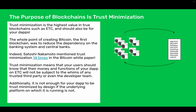The whole point of creating Bitcoin, the first blockchain, was to reduce the dependency on the banking system and central banks. Indeed, Satoshi Nakamoto mentioned trust minimization 14 times in the Bitcoin white paper. Trust minimization means that your users should know that their money and functions of your dApp on ETC will not be subject to the whims of any trusted third party or even the developer team. Additionally, it is not enough for your dApp to be trust minimized by design if the underlying platform on which it is running is not.